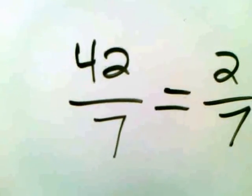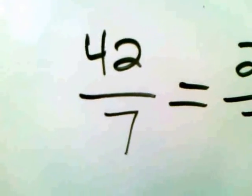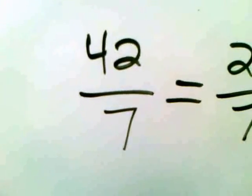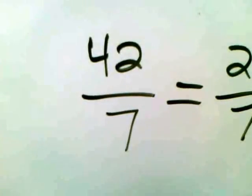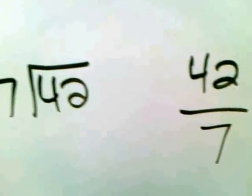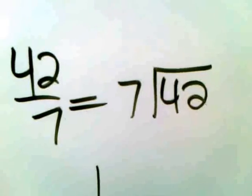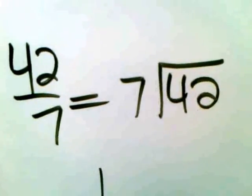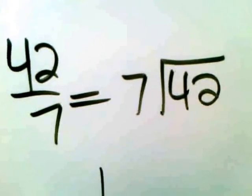And now the fraction looks like this: 42 over 7. 42 over 7 is just another way to say 42 divided by 7. 42 divided by 7 is a basic division fact. 42 divided by 7 equals 6.